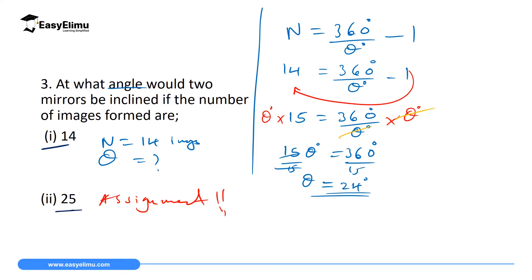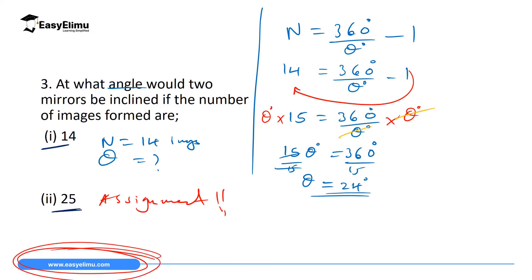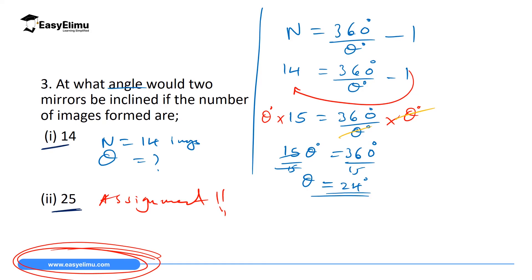Now try this as your assignment: find the angle when 25 images are formed. If you face any challenge, visit the Easy Elimu website where there are several questions with solutions on the same topic. That marks the end of our lesson today. In the next lesson we will look at rotation of mirrors.